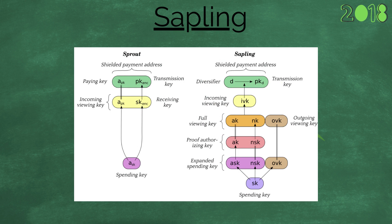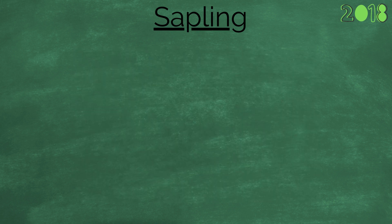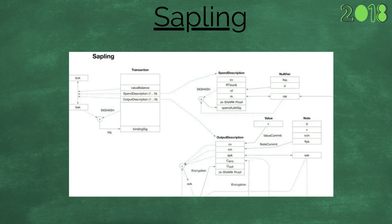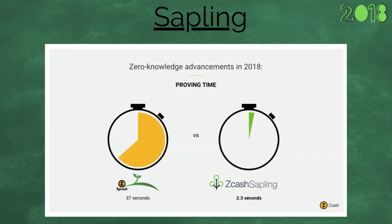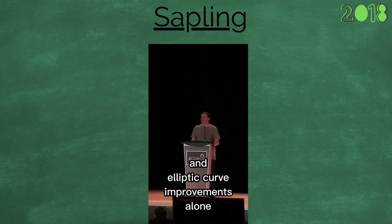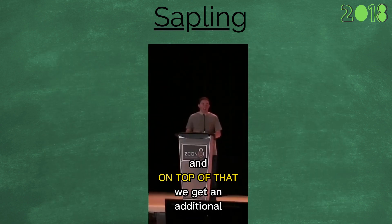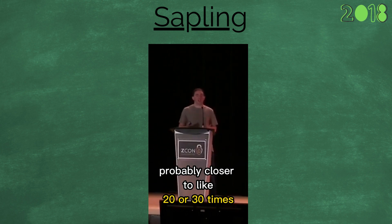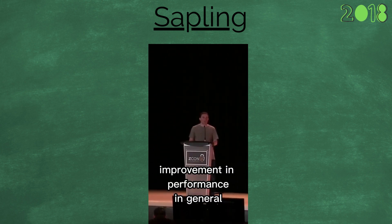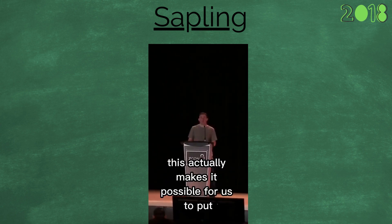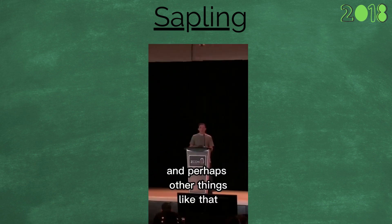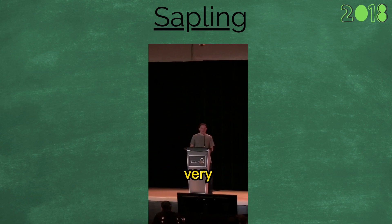The Sapling pool, which launched in 2018, brought with it more breakthrough technology: diversified payment addresses and the introduction of outgoing viewing keys and full viewing keys. The spend and output information now being separated and signed separately. For the first time ever, shielded transactions were possible on mobile devices. Zcash and elliptic curve improvements alone, and on top of that, we get an additional probably closer to 20 or 30 times improvement in performance, depending on what you're doing. So what would take maybe 40 seconds on my computer takes two and a half or three seconds instead — it actually makes it possible to put shielded transactions on mobile phones. Very crucial.